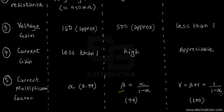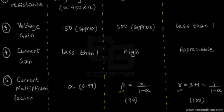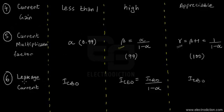For the Common Collector mode, the current multiplication factor is represented by gamma (γ), where γ = β + 1 = 1 / (1 − α). For α = 0.99, this gives γ ≈ 100. So the Common Collector mode does provide a good amount of current amplification as well.